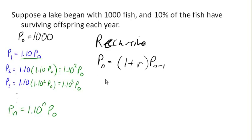So Pn is going to be, let's see here, where did this 1.10 come from? That was the 1 plus r, right? That's 1 plus r, where again, r is the growth rate. And that's a percentage growth rate. Raised to the n power times P0.